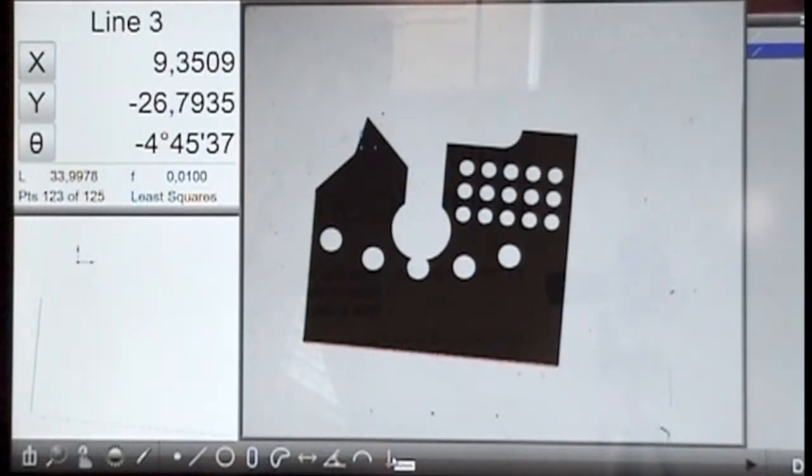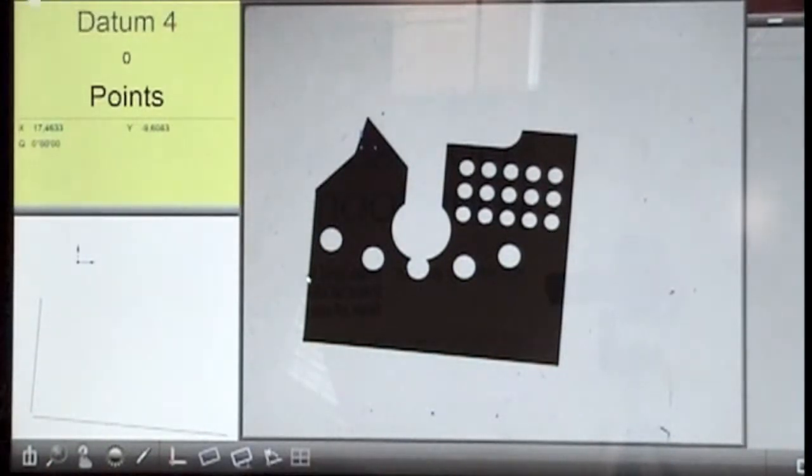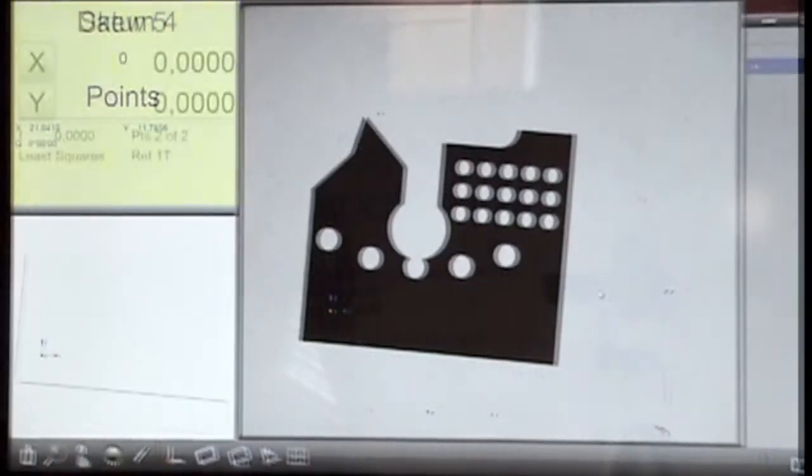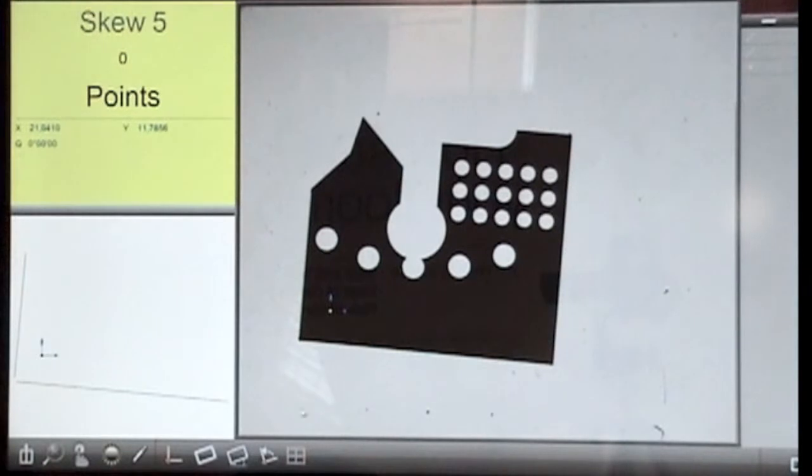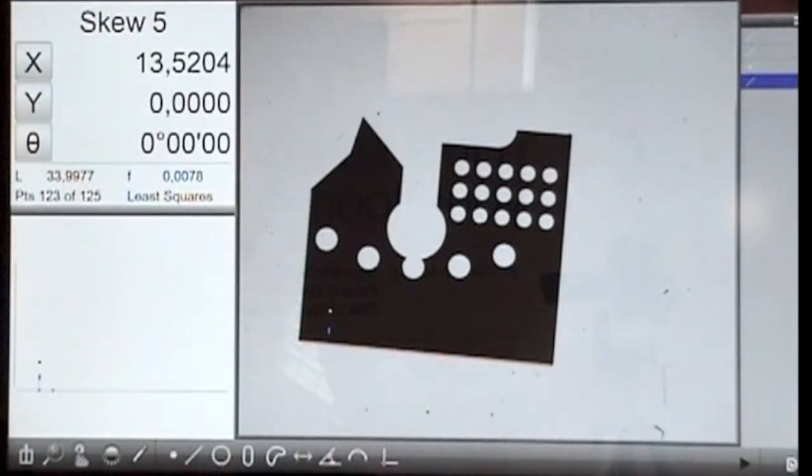Now we will select a datum pivot point which will be derived from the intersect point we have just found. We can now select the bottom line as a reference line and rotate around the pivot point. This is then shown in the bottom left hand panel.